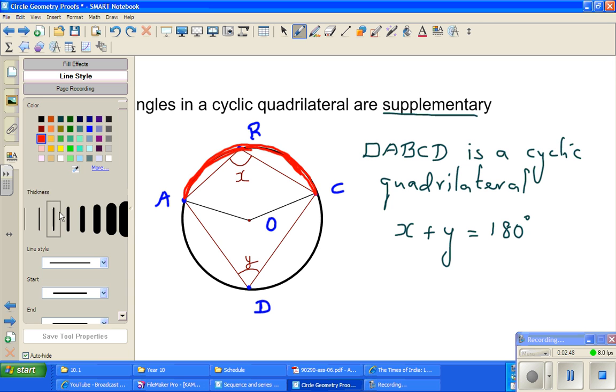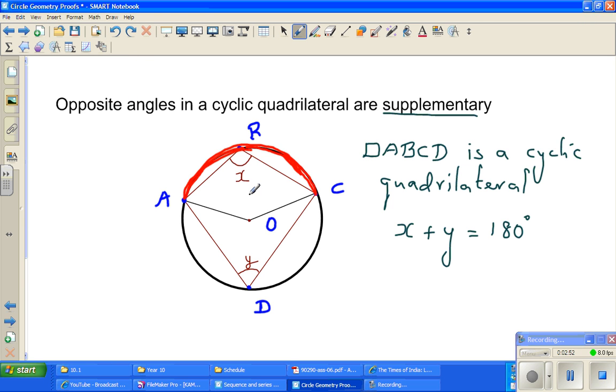Using the same result, I can say that if this angle is Y, this has to be 2Y. Now, in the same logic, if this is X...